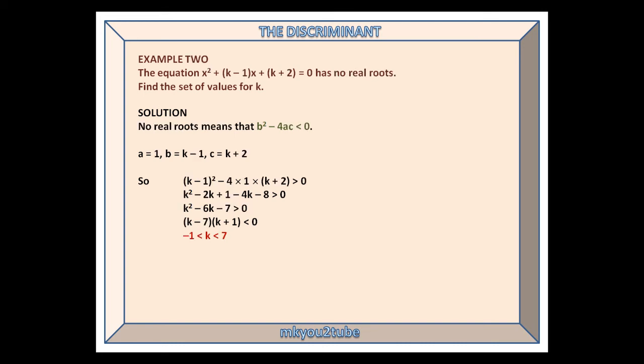Example 2: The equation x squared plus (k minus 1)x plus k plus 2 equals 0 has no real roots. Find the set of values for k. No real roots means that b squared minus 4ac is less than 0.